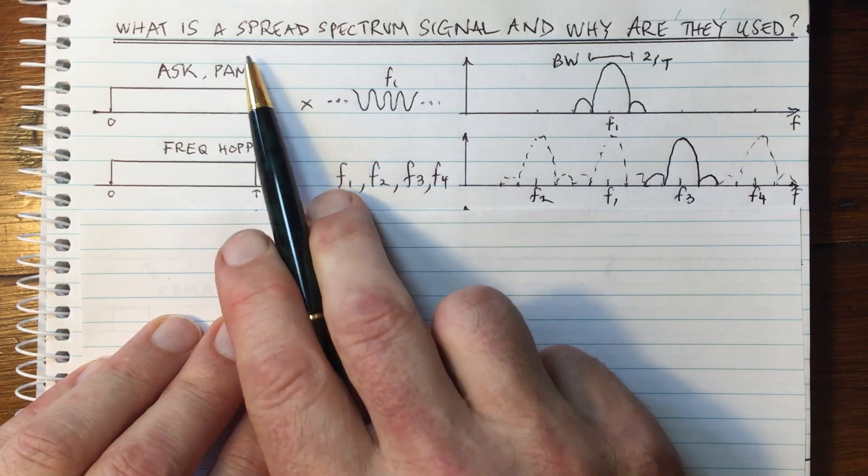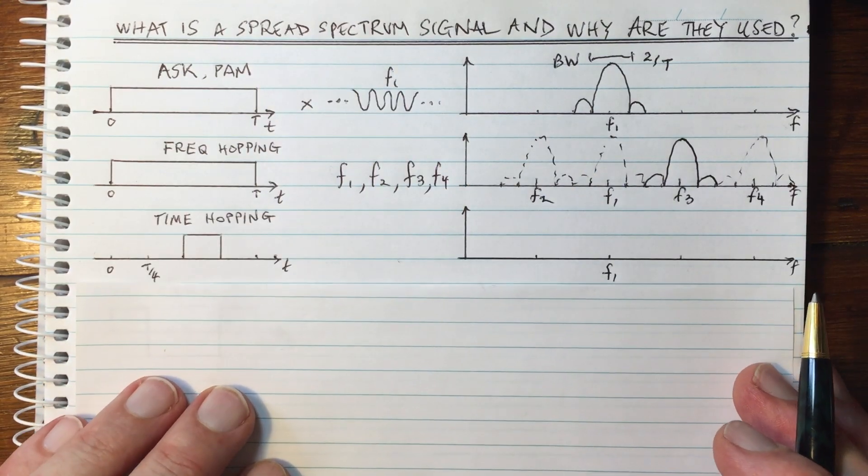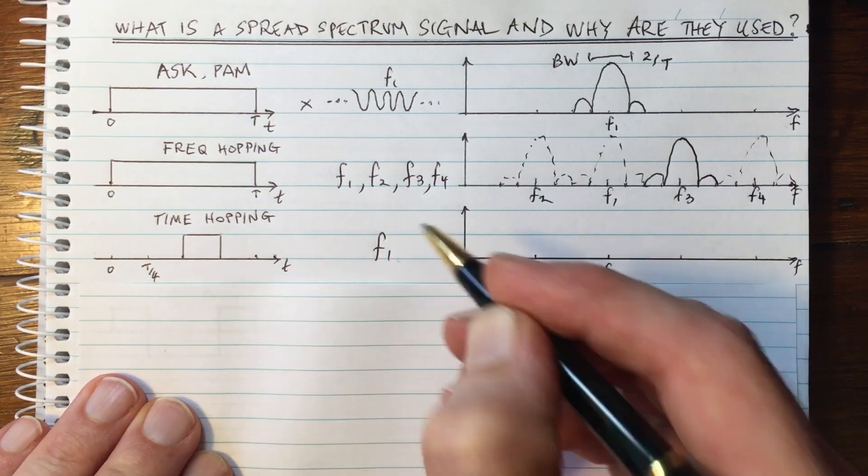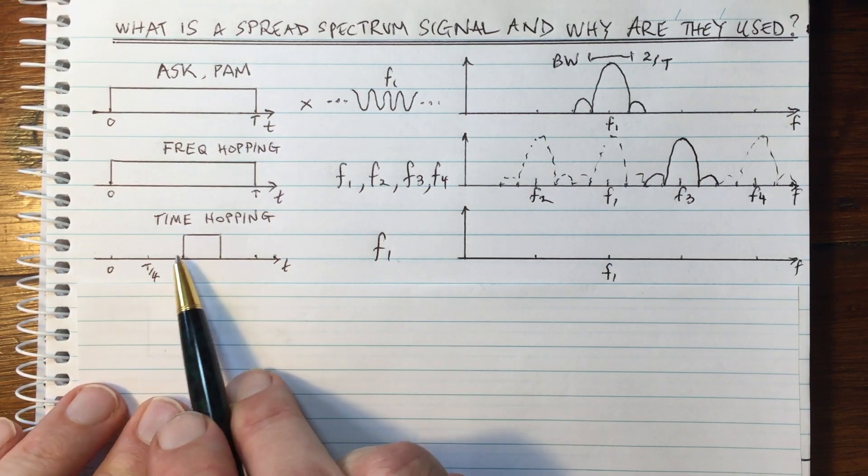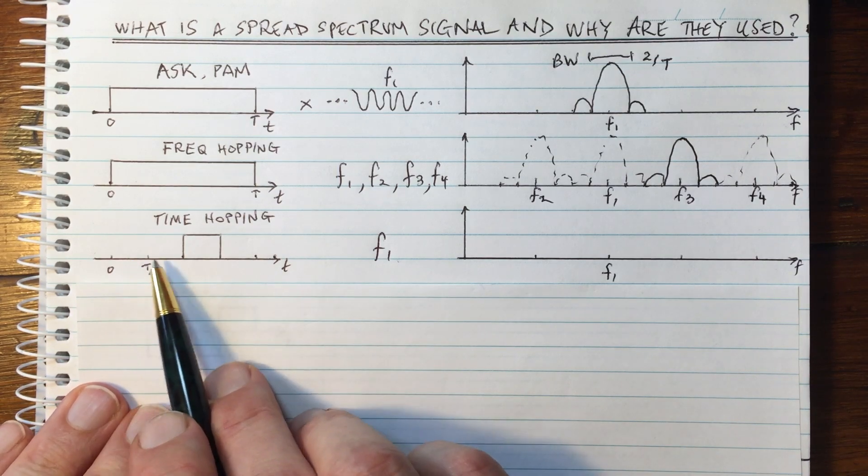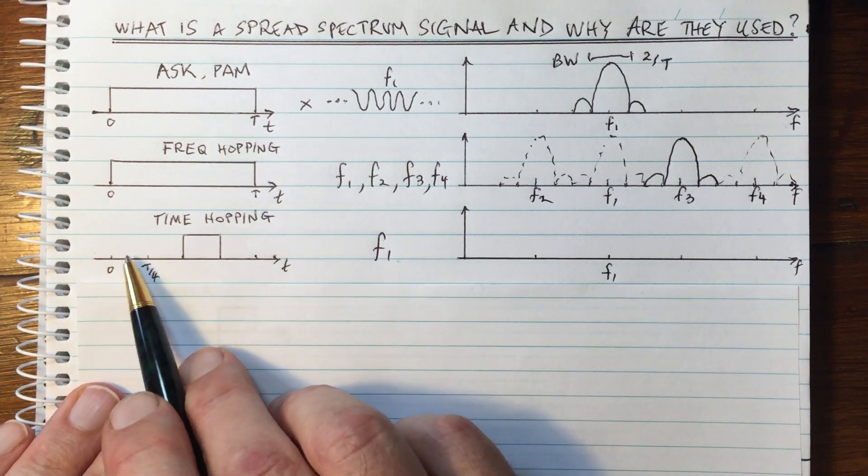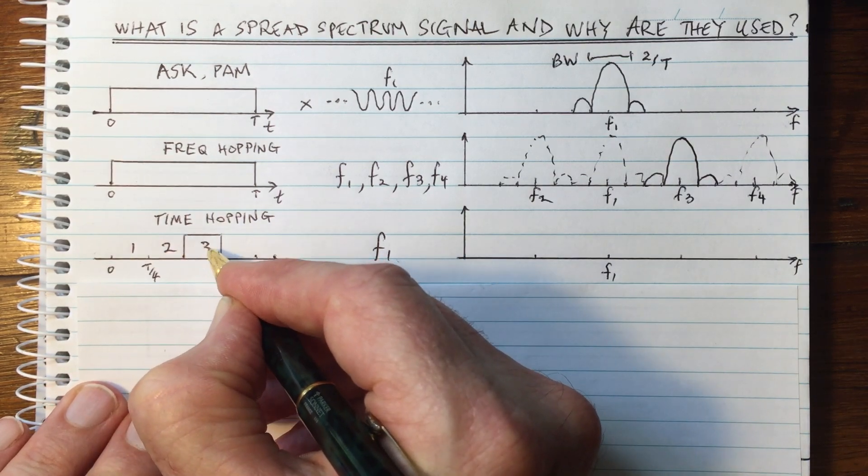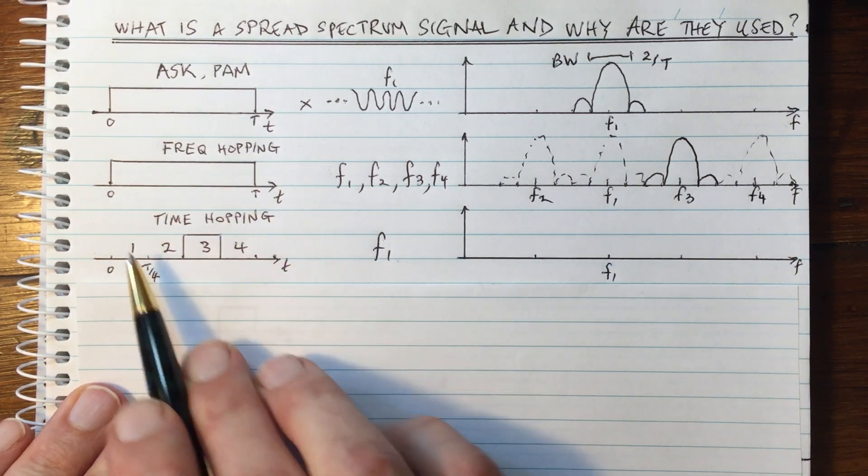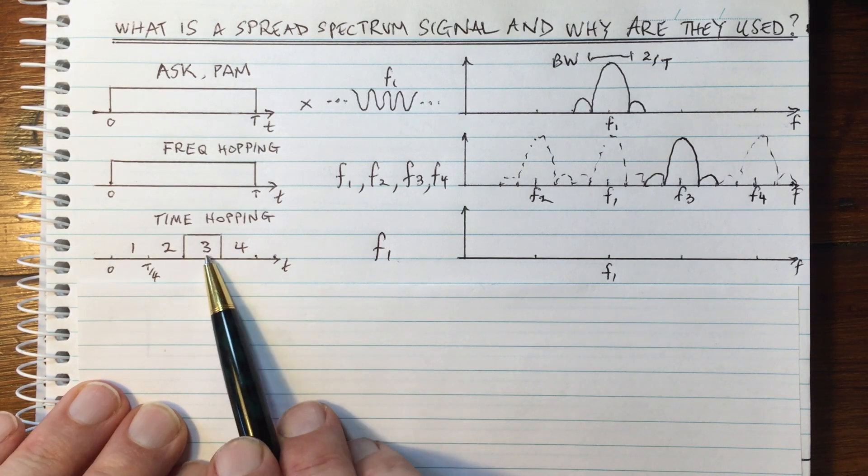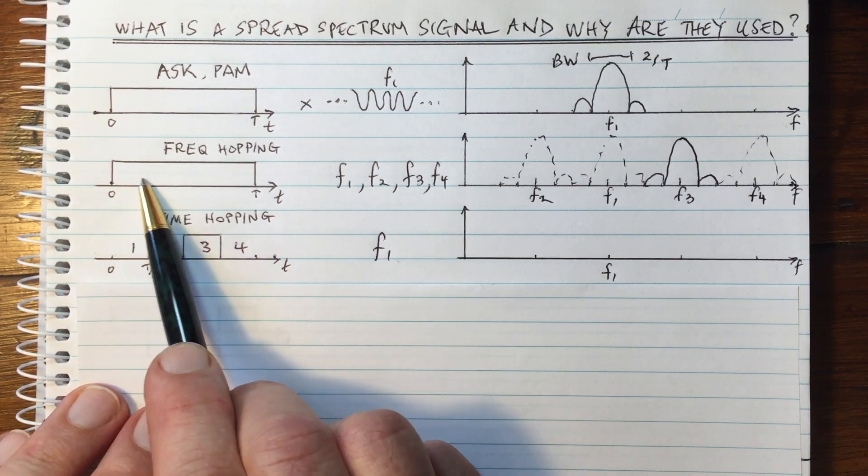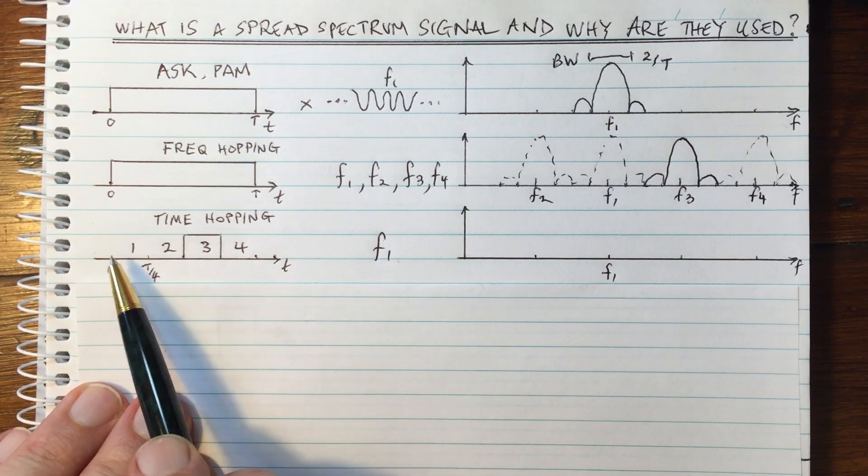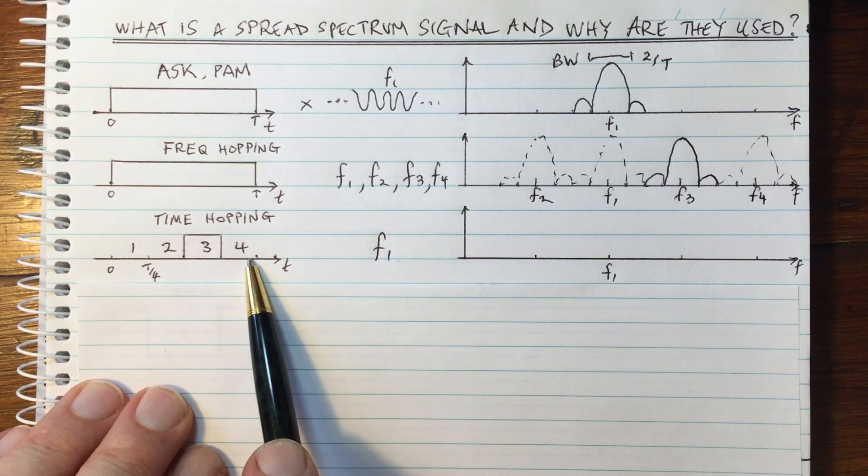So let's think of another way of spreading the spectrum. And that's an approach called time hopping. So in this case, we only use a single carrier, but now we divide up the time. So we divide it up into slots, the capital T. In this case, I've shown four. And we are dividing it up into four slots so that in this particular case, the symbol is being sent in the third slot. So instead of sending the symbol over all the time, we're now sending it only during the third slot. And slots 1, 2, and 4 are remaining silent.